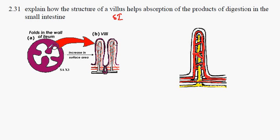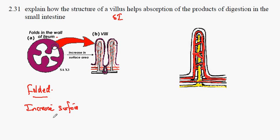The whole inside wall of the small intestine, here called the ileum, is folded. One of the effects of folding is to increase the surface area. When we look at the actual surface of the wall of the small intestine, we discover finger-like projections known as villi.